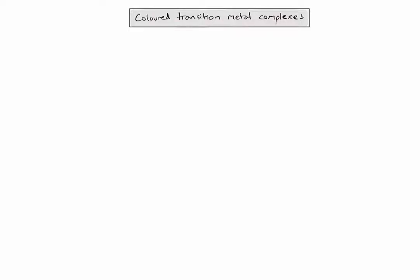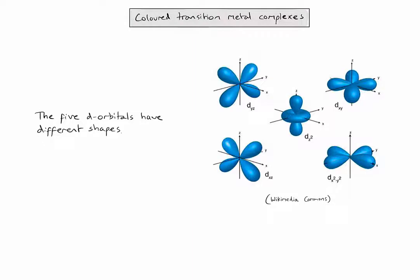Before we can explain why transition metal complexes are colored, we need to know a little bit about d-orbitals. In the d-sublevel of an atom, there are five d-orbitals with equal energy that look something like this. You don't need to know how to draw or describe the shapes in IB chemistry, but it's useful to have a general idea for reasons we'll see in a minute.